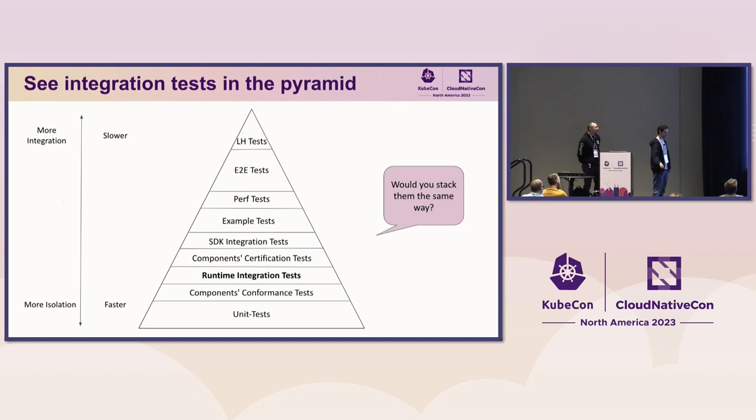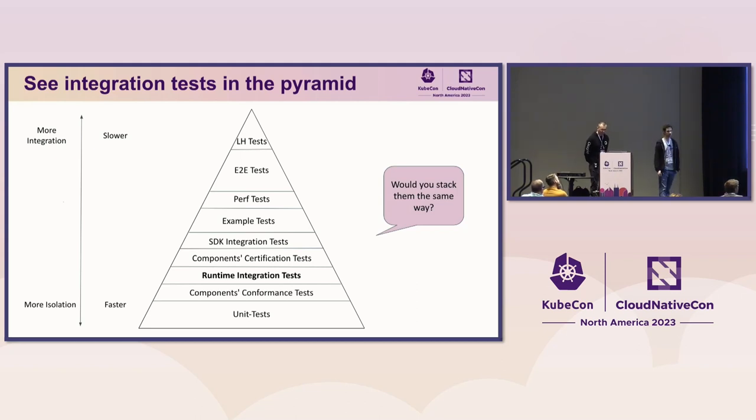This is the end of the pyramid, showing the different trade-offs between integration and isolation. We think we've covered pretty much everything. We'd love it if someone told us what kind of tests we didn't add, because we love to add tests. If there is any form of tests you think we should be adding, please come and talk to us.